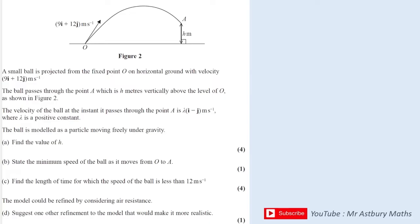A good way to start any projectiles question is to do a horizontal and a vertical SUVAT. So I'll write S, U, V, A and T for vertical and horizontal. The vertical acceleration is always minus 9.8 due to gravity, and horizontal acceleration is always zero because we assume there are no forces acting in the horizontal direction. The initial velocity for the vertical is 12 and for the horizontal is 9, as given in the question.